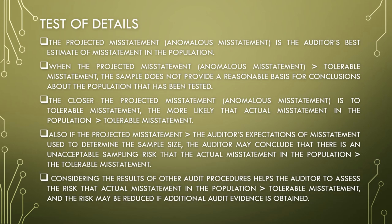In the case of test of details, the projected misstatement plus anomalous misstatement, if any, is the auditor's best estimate of misstatement in the population. When the projected misstatement plus anomalous misstatement exceeds tolerable misstatement, the sample does not provide a reasonable basis for conclusions about the population tested. The closer the projected misstatement is to tolerable misstatement, the more likely that actual misstatement in the population may exceed tolerable misstatement. If the projected misstatement is greater than the auditor's expectation used to determine sample size, the auditor may conclude there is unacceptable sampling risk. Considering results of other audit procedures helps assess this risk, which may be reduced if additional audit evidence is obtained.